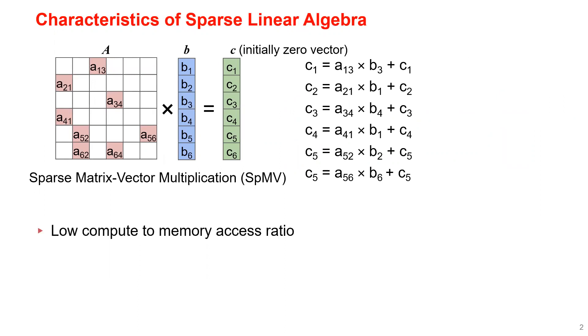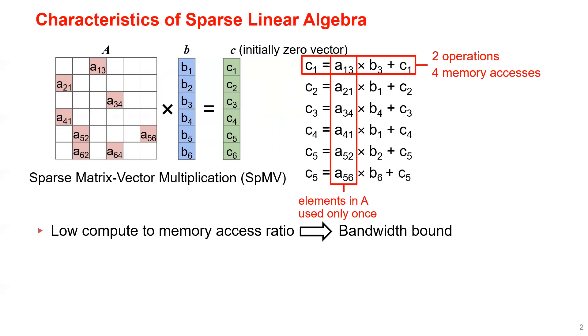This compute pattern exhibits a low compute-to-memory access ratio, because in each line there are only two operations but four memory accesses, and also each element in the matrix A is used only once. This leads to a situation called bandwidth bound, which means the performance of sparse linear algebra accelerators is limited by the memory bandwidth.